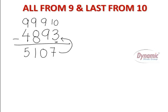So this 5, 107 is the complement of 4, 8, 9, 3 or we can also say that 4, 8, 9, 3 is the complement of 5, 107. I hope all of you must have understood the concept. Now let's take one more example to understand it in a better way.